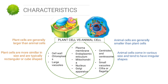This can be seen in the diagram shown in this video. Other differences: plant cells are generally larger than animal cells. Plant cells are more similar in size and are typically rectangular or cup-shaped. Animal cells come in various sizes and tend to have irregular shapes.